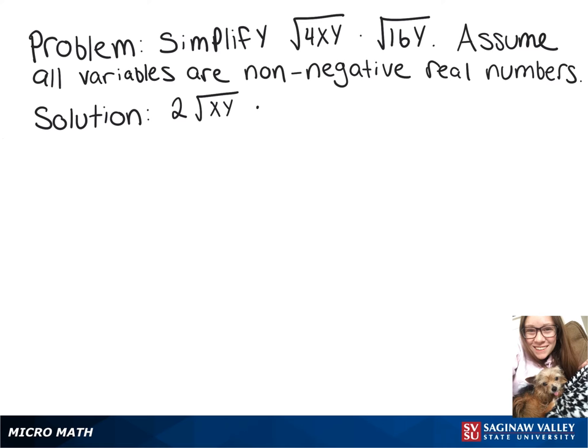Same thing with the square root of 16y. Square root of 16 is 4, and then the y stays underneath. Now we can multiply the numbers outside the radical, and then multiply the numbers inside the radical.